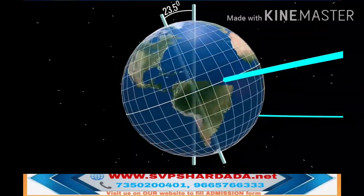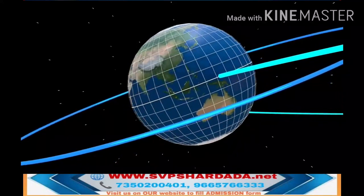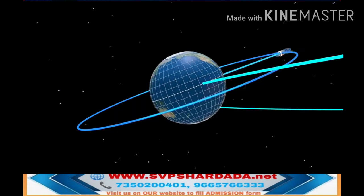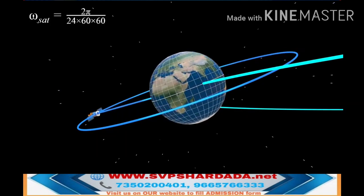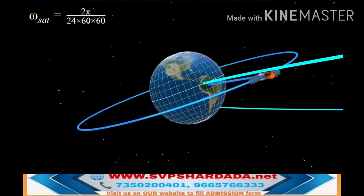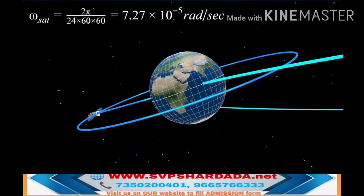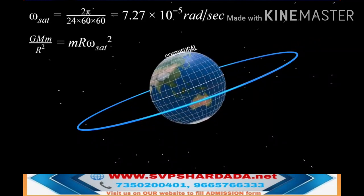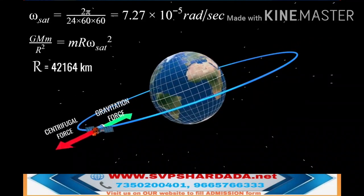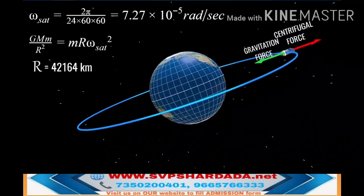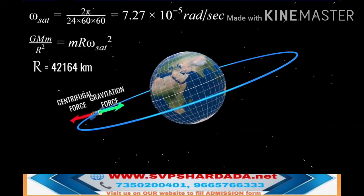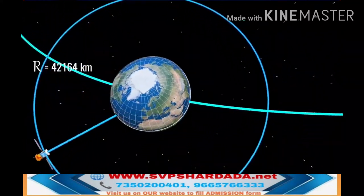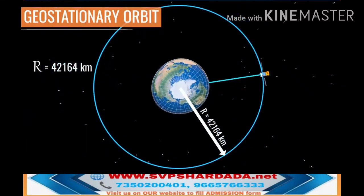For satellite TV to work, the satellite should not move relative to your house. This means that the satellite should rotate at the same speed as that of the Earth, which means it will take 24 hours to complete one cycle. Let's work out the force balance equation of the gravitational and centrifugal forces at this point using this speed information. You can see that the orbital radius required to achieve the no-relative-motion condition for the satellite is exactly 42,164 kilometers. This orbit is known as a geostationary orbit.